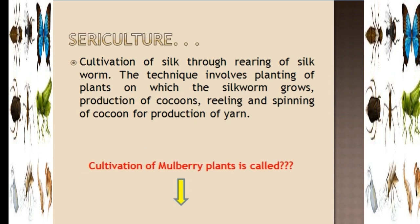So, Sericulture. Sericulture is the cultivation of silk through rearing of silkworms. In common terms, it is the production of silk. Sericulture includes everything — starting from the production of food for the silkworm and the processing of the cocoons to get silk. In broad terms, sericulture includes the cultivation of mulberry plants.